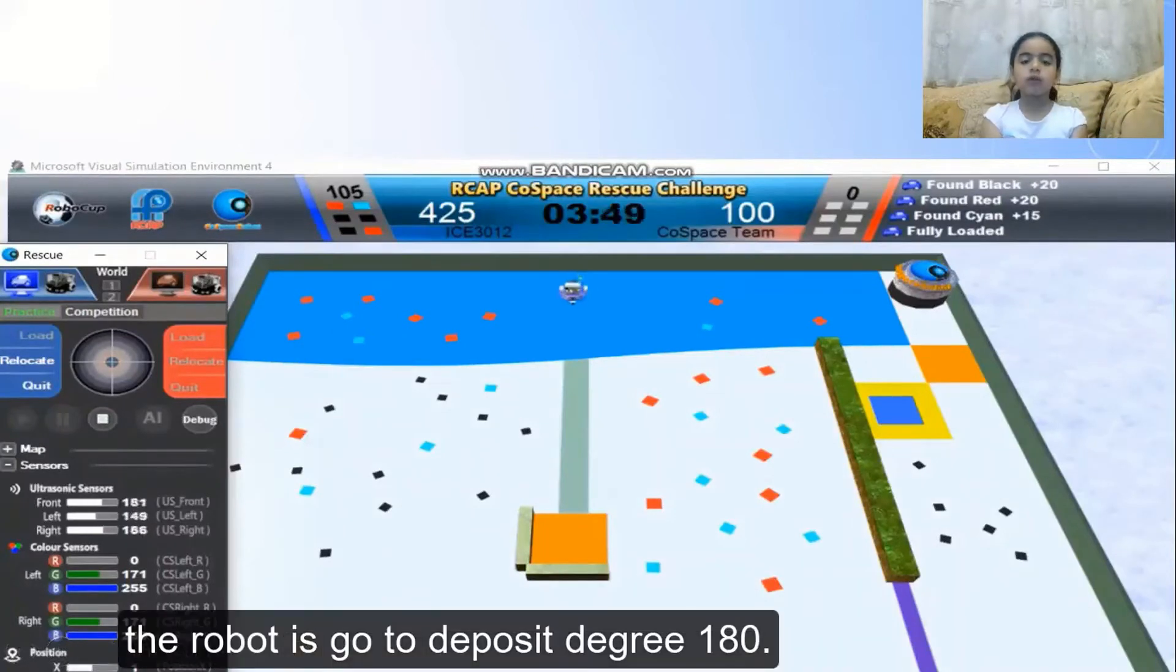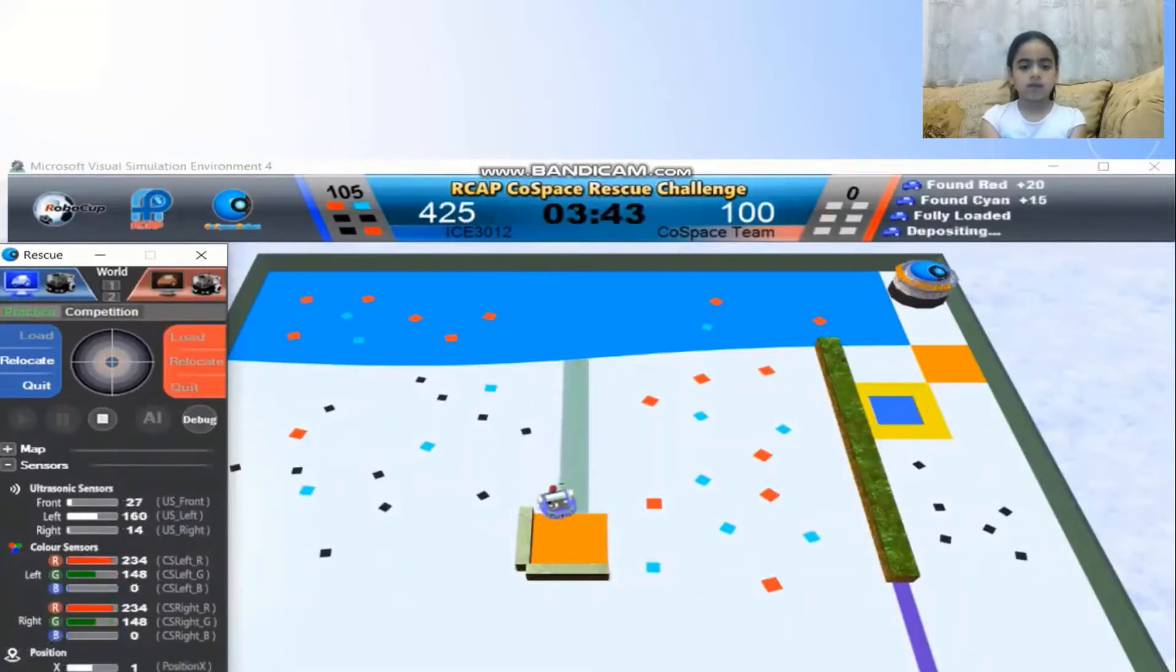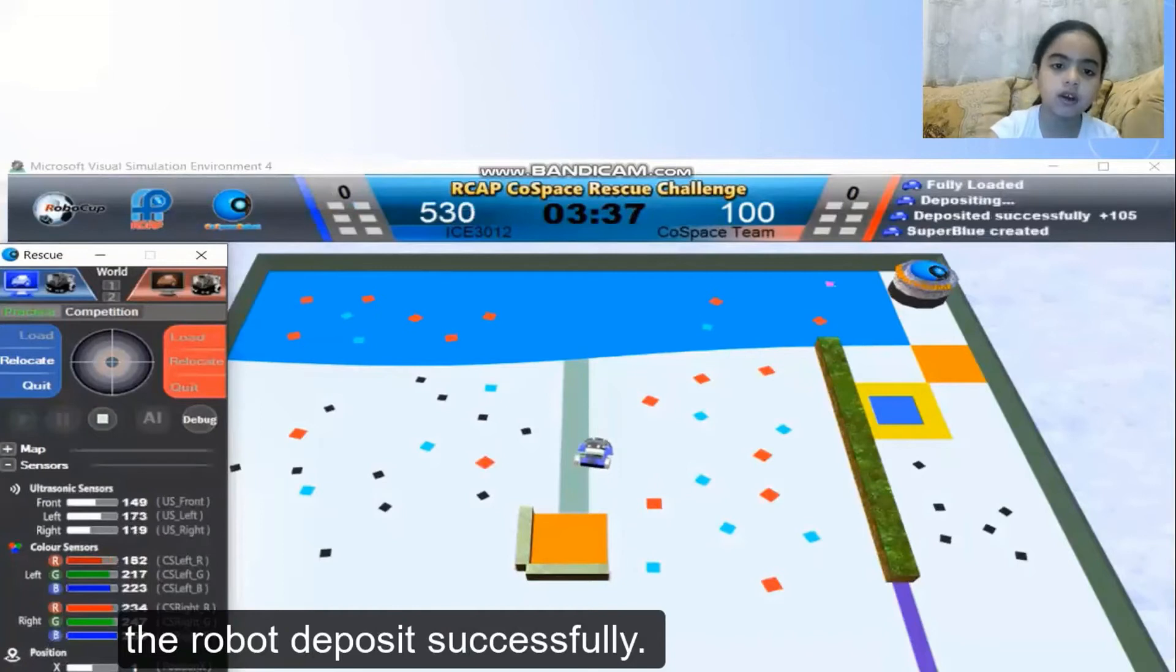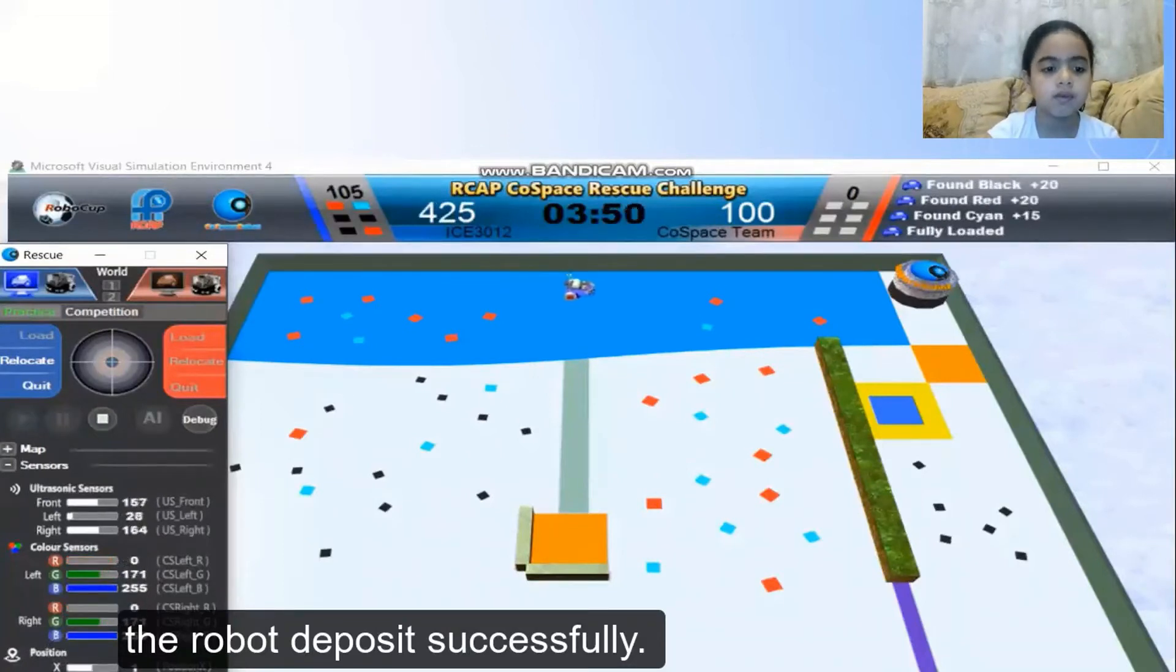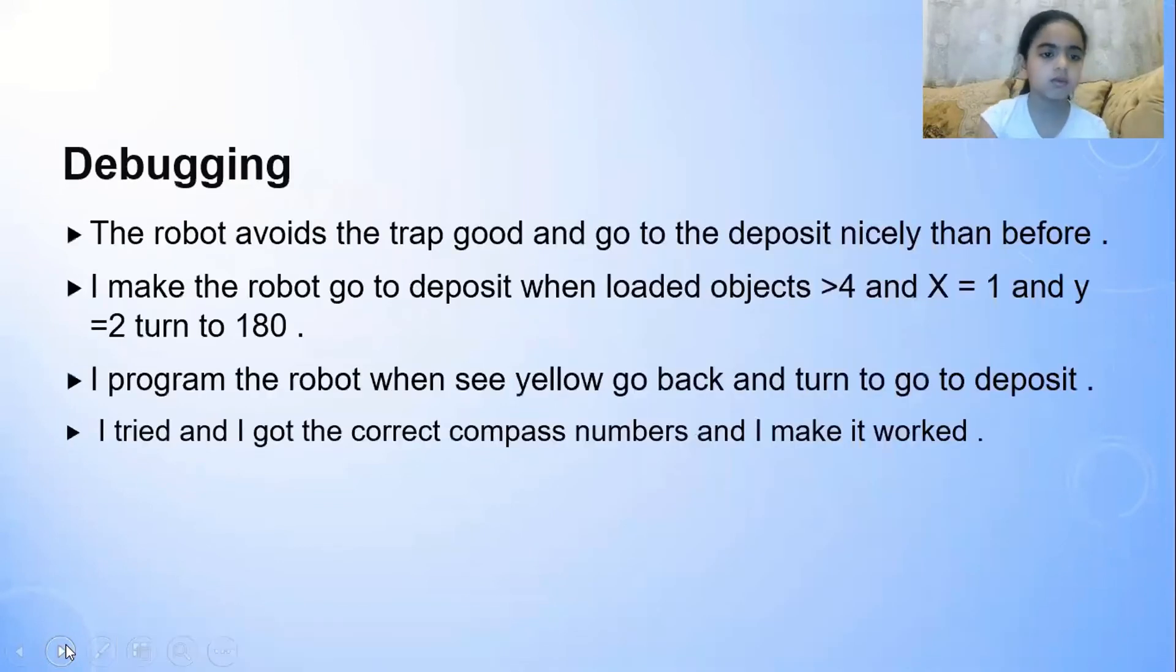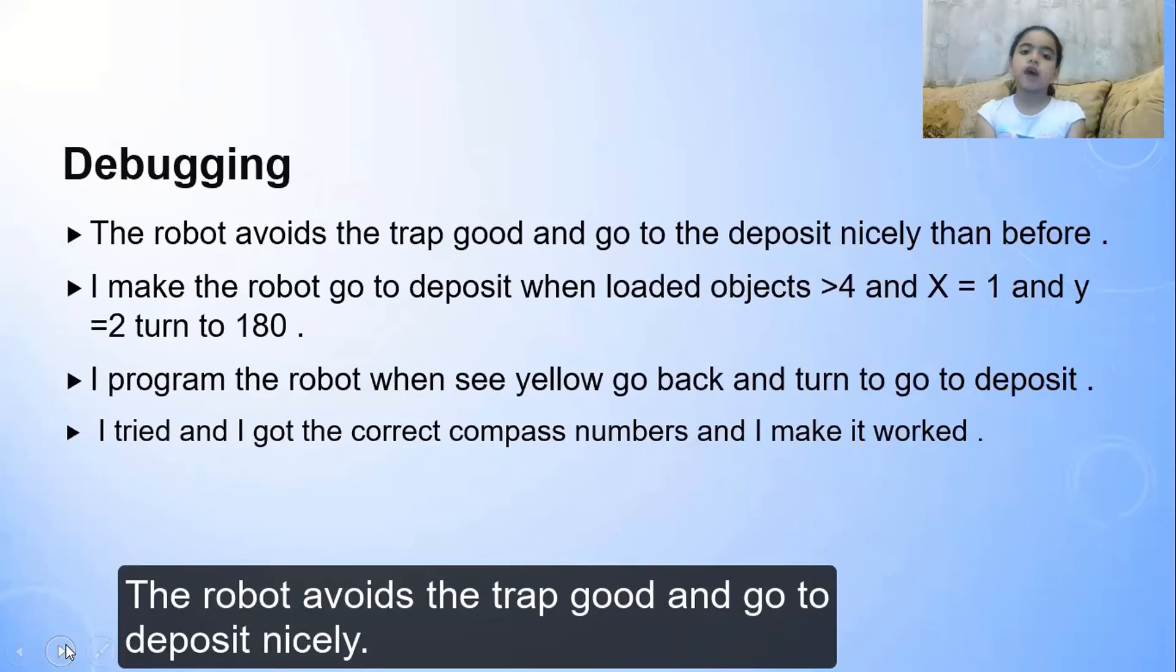The robot is going to deposit, decrease 180. The robot deposits successfully. Here is my flowchart. The robot avoids the trap good and go to deposit nicely.